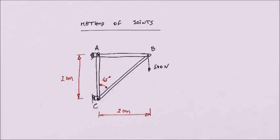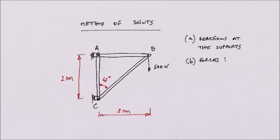Today we are going to do the method of joints. Part A is going to be reactions at the supports, and in part B we are going to do forces in each member of the truss.